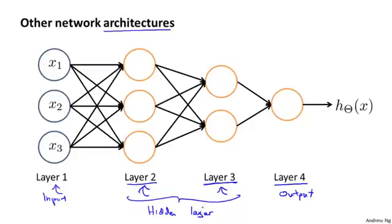So hopefully from this video, you've gotten a sense of how the feed forward propagation step in a neural network works, where you start from the activations of the input layer and forward propagate that to the first hidden layer, then the second hidden layer, and then finally the output layer. And you also saw how we can vectorize that computation. I realized that some of the intuitions in this video of how the certain layers are computing complex features of the earlier layers, I realized some of that intuition may be still slightly abstract and kind of at a high level. And so what I'd like to do in the next two videos is work through a detailed example of how a neural network can be used to compute nonlinear functions of the input. And hopefully that will give you a good sense of the sorts of complex nonlinear hypotheses we can get out of neural networks.